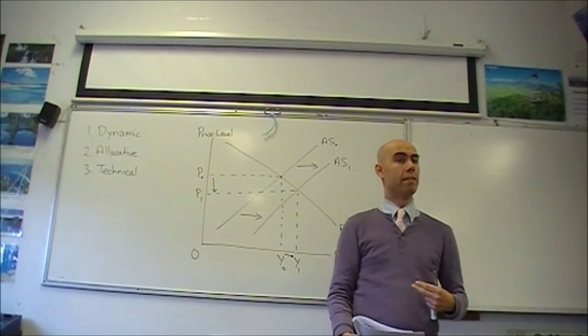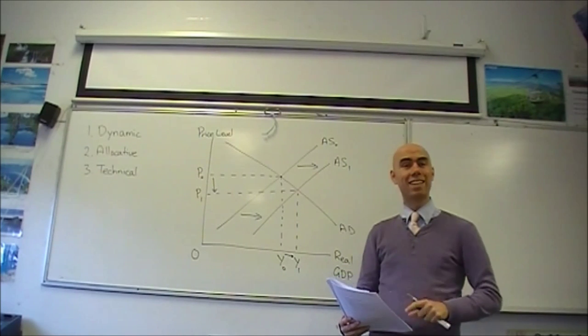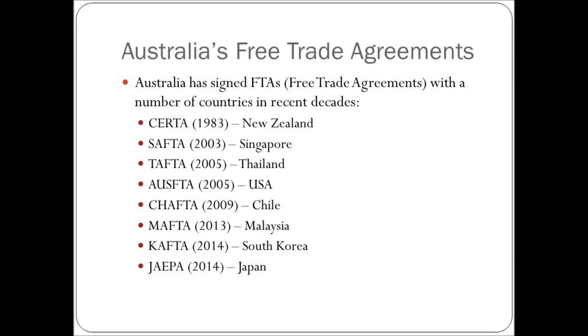Australia's free trade agreements. Australia has had a number of free trade agreements that we've entered into in recent years, particularly in the last 10 years. You go back to 1983 and the Closer Economic Relations Treaty was signed with New Zealand, or CERTA, as it's often referred to.